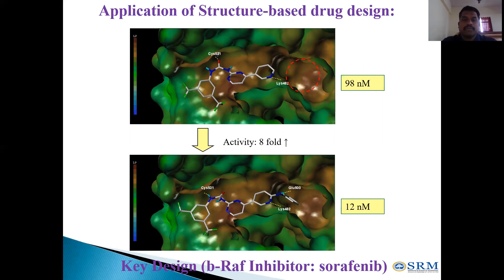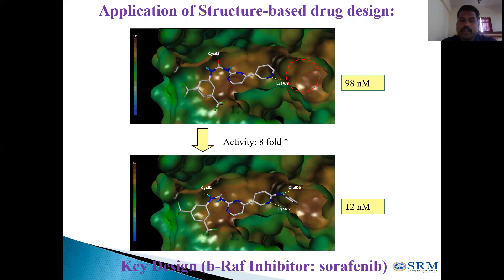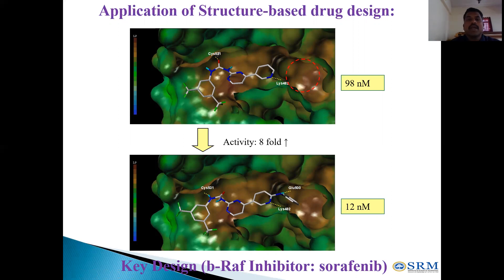One example is the inhibitor sorafenib, which was docked using the BRAF enzyme. After docking, researchers understood there was some space available in the BRAF enzyme. Before docking, the IC50 value for sorafenib was 98 nanomolar. During docking research, they understood further modification could be done on the small molecule. After inclusion of a functional group in the BRAF inhibitor sorafenib, the activity increased to 812 nanomolar.